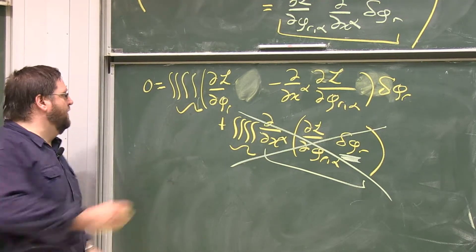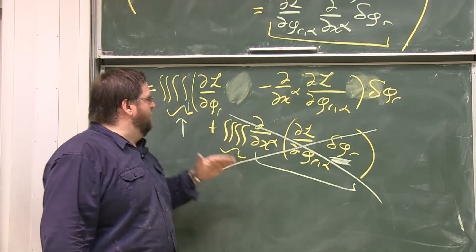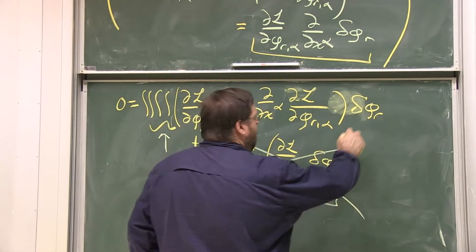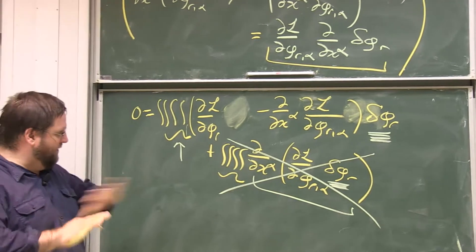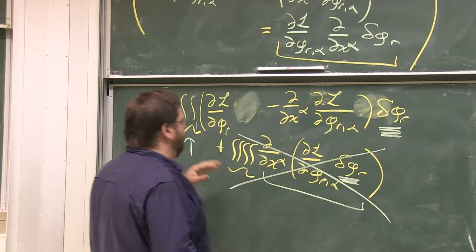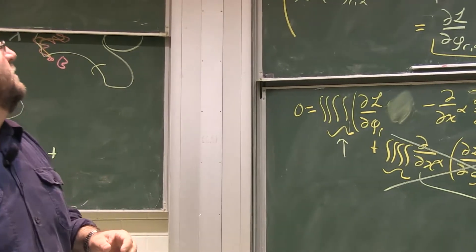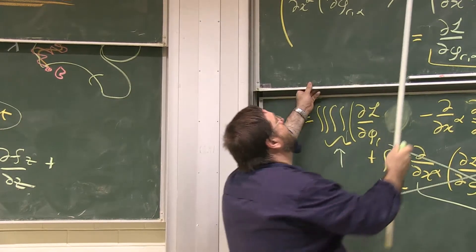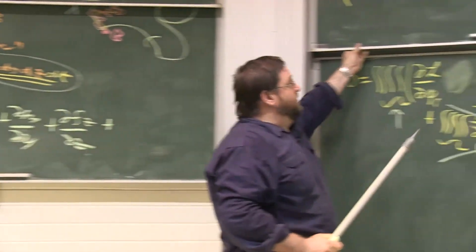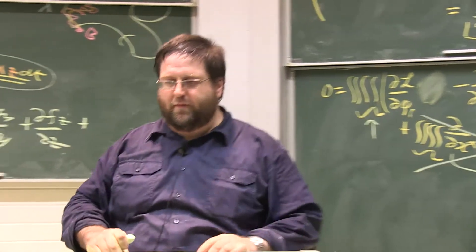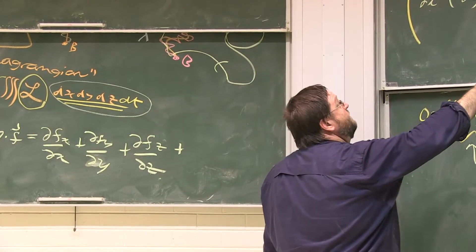Since this holds for any spacetime volume and delta phi_r is arbitrary, the only way this integral can vanish is if what's in round brackets vanishes. That gives the Euler-Lagrange equations: dL/d(phi_r) minus d/dx-alpha of (dL/d(phi_r comma alpha)) equals zero. That's it — we've used the principle of least action in a generalised setting to deduce the Euler-Lagrange equations. You pick a Lagrangian density, shove it through this machine, and you get your associated field equations.